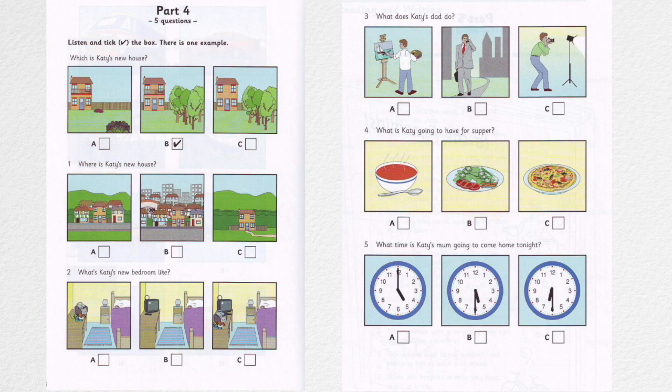4. What is Katie going to have for supper? I'm going to make supper tonight. What are you going to make? Can you make pizza? Or soup? No, I can't make those things. I'm going to make a salad. Lovely.